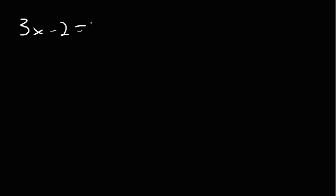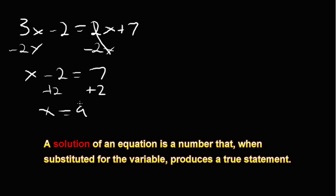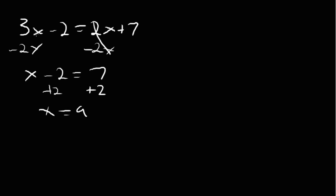Let's start by solving the equation 3x minus 2 is equal to 2x plus 7. We will take 2x from both sides to get the x's on the same side. 3x minus 2x is 1x, so we have x minus 2 is equal to 7. We will add 2 to both sides to get x alone, and x is equal to 9. So 9 is the solution. 3 times 9 is 27 minus 2 is 25, and 2 times 9 is 18 plus 7, which is 25.